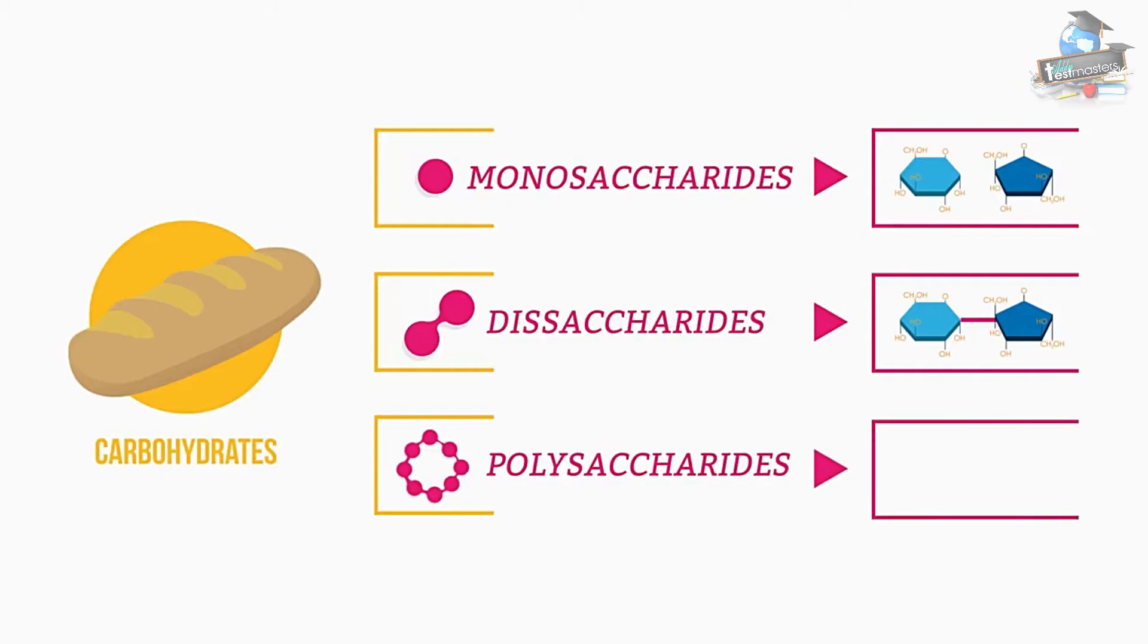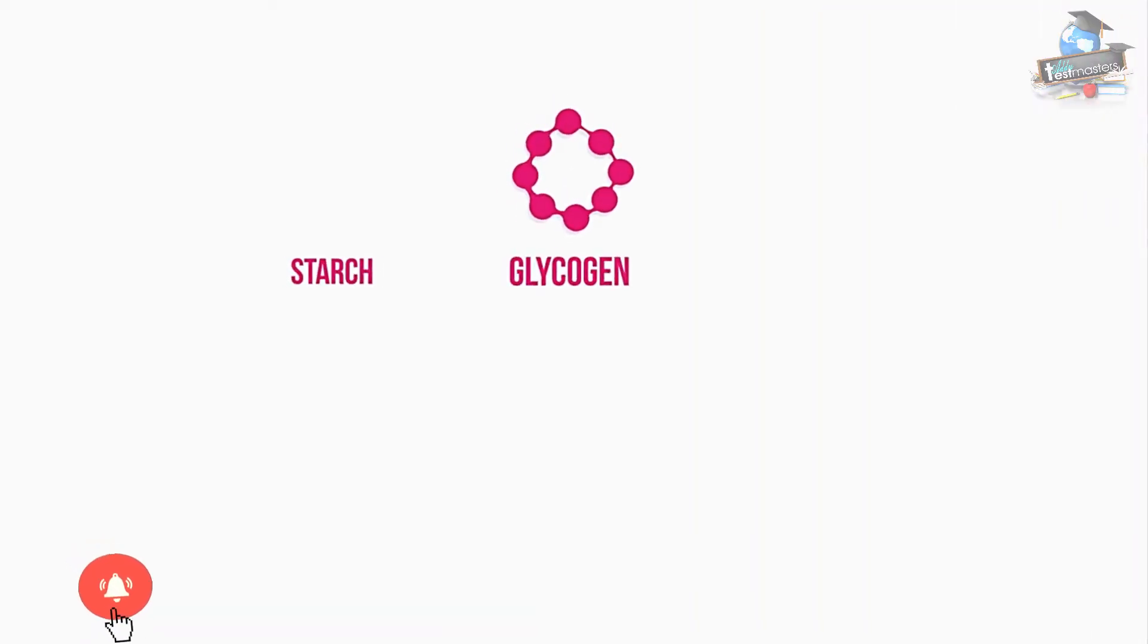And some carbohydrates are polymers that are made up of lots of sugars joined together, and so are called polysaccharides. Starch, glycogen, and cellulose are three important polysaccharides.